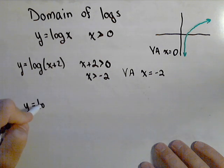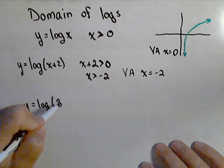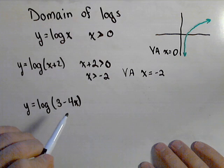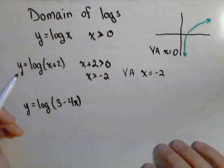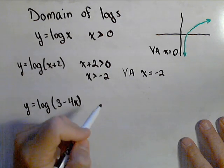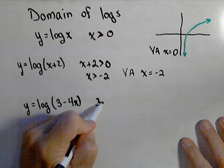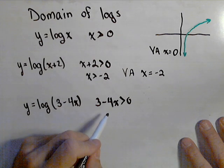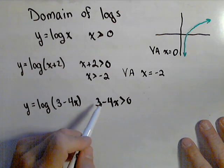So y equals log of three minus four x. And we want to find the domain. And we're just going to do this algebraically. We can verify this with a graphing calculator. We know that we need three minus four x to be greater than zero. So let's see if we can get our domain.